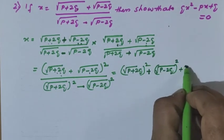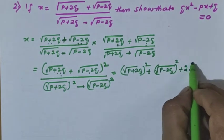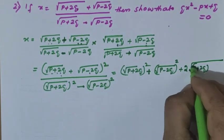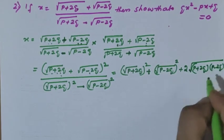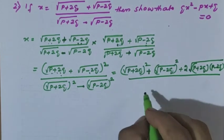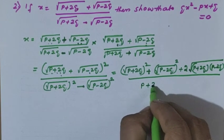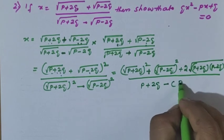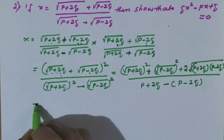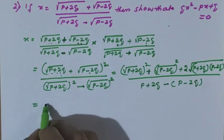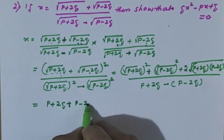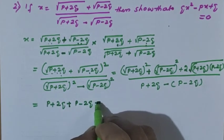What is the middle term? 2 into root of p plus 2q into root of p minus 2q. In the denominator, we can remove the root because root of p plus 2q whole squared is just p plus 2q, minus bracket p minus 2q. The root is removed since it is squared. In the numerator also we can remove the root: p plus 2q plus p minus 2q plus 2 into root of p plus 2q into root of p minus 2q.